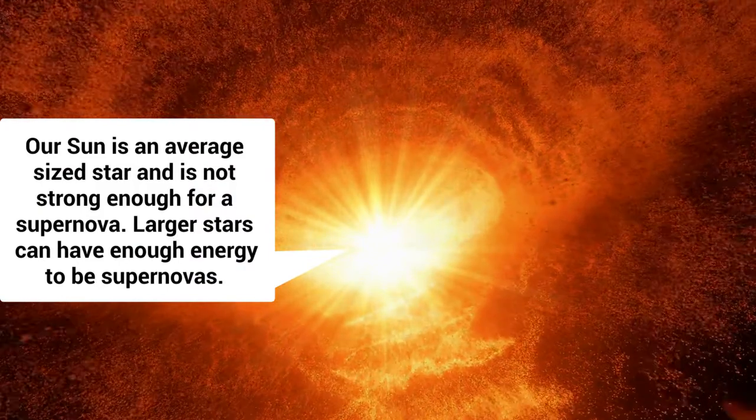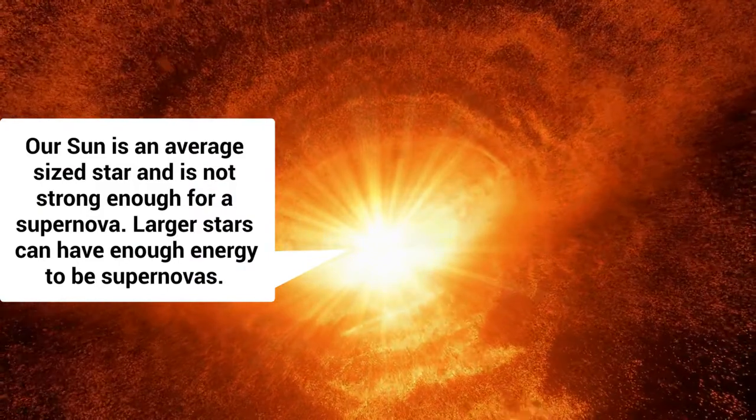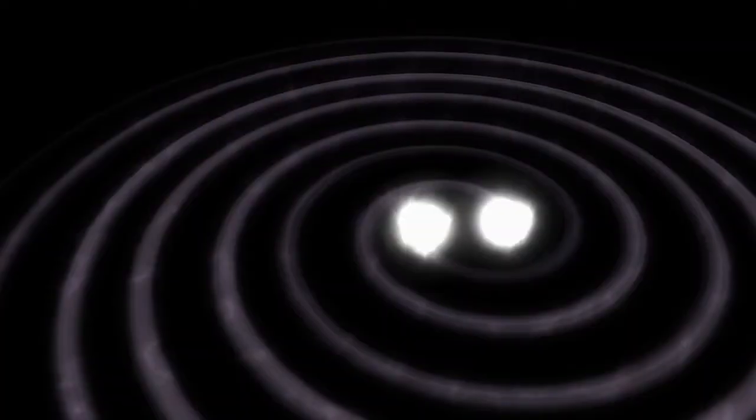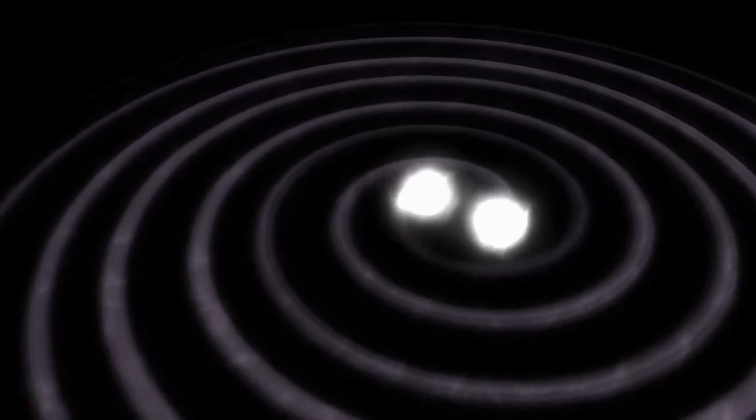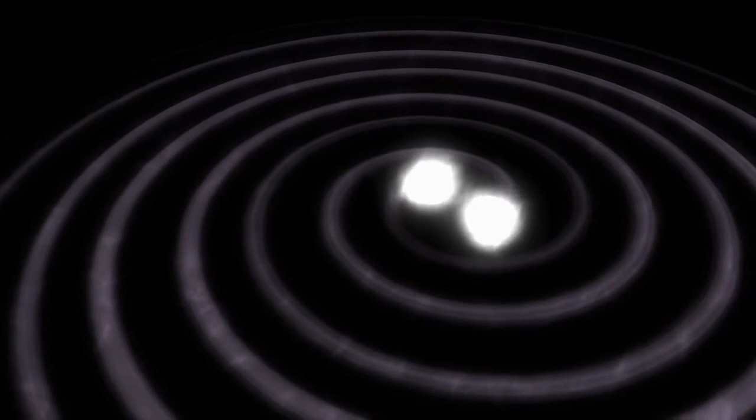When stars die, they can sometimes form black holes. Black holes are cosmic bodies of intense gravity from which even light cannot escape. They're famous for sucking in everything in their path. Bose-Einstein condensates are the form of matter best representing a black hole, as using this form of matter in a lab recreates the atmosphere in a black hole.